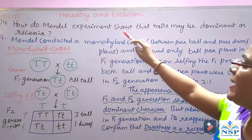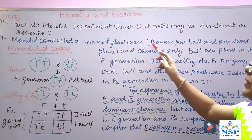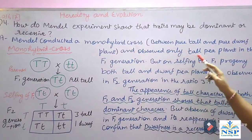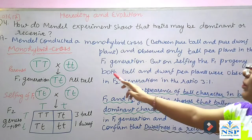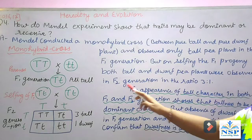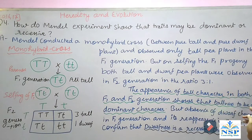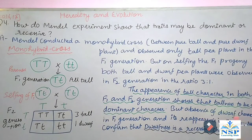Next question: How do Mendel's experiments show that traits may be dominant or recessive? Mendel conducted the monohybrid cross between pure tall and pure dwarf plants, and observed only tall pea plants in the F1 generation. On selfing, both tall and dwarf plants were observed in F2 generation in the ratio 3:1. The appearance of tall characters in both F1 and F2 shows tallness to be dominant, while absence of dwarf in F1 and its reappearance in F2 confirmed dwarfness is recessive.